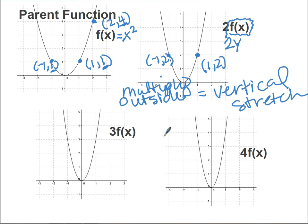Imagine if you took a piece of play-doh and stretched it going straight up and down — it would look like it's getting skinnier as it gets longer and longer, but really it has the same amount of material. Same thing is happening with this graph: I'm stretching it upward, so my quadratic function looks skinnier even though really it's just getting taller.